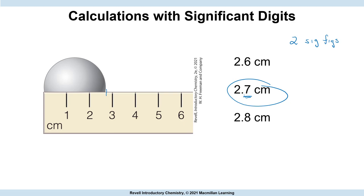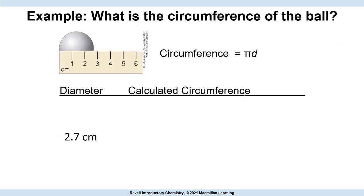We're pretty confident with 2.7, but we're saying we're not totally certain — it's probably between 2.6 and 2.8, with uncertainty built in. So there's our estimated digit, that last one.